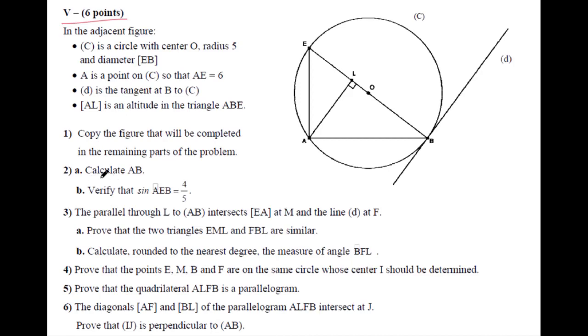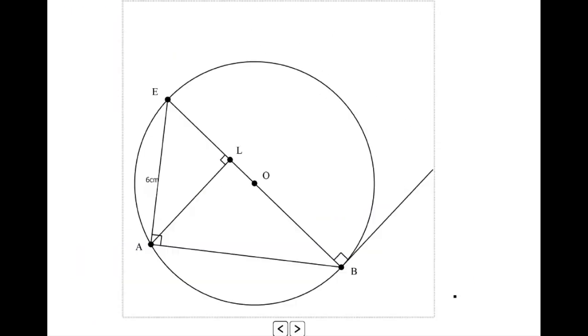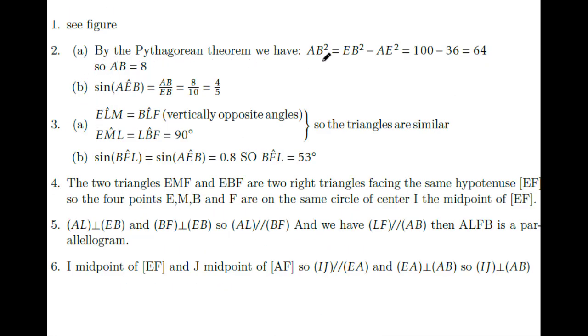The first question is calculate AB. We need to calculate AB. Looking at the triangle, AE equals 6 cm, OB equals 5 and EB equals 10 cm. By the Pythagorean theorem, AB squared equals EB squared minus AE squared equals 100 minus 36 equals 64, so AB equals 8 cm.